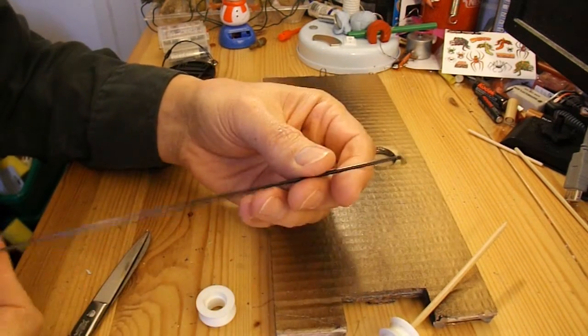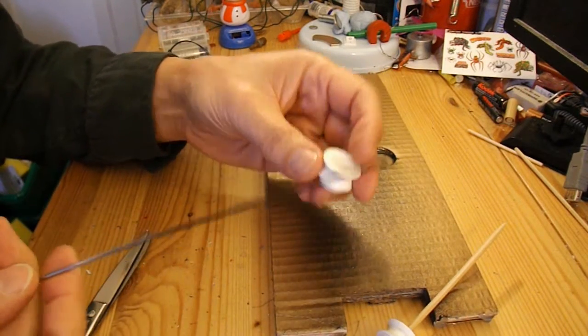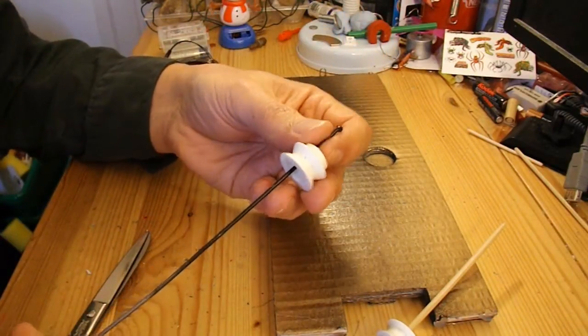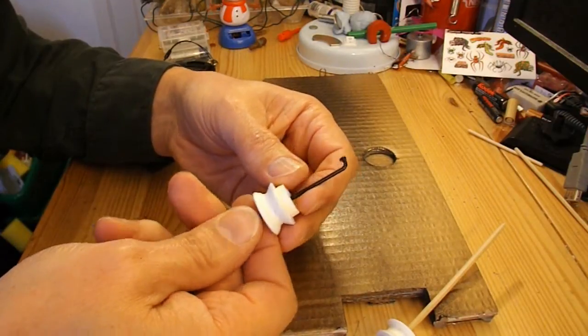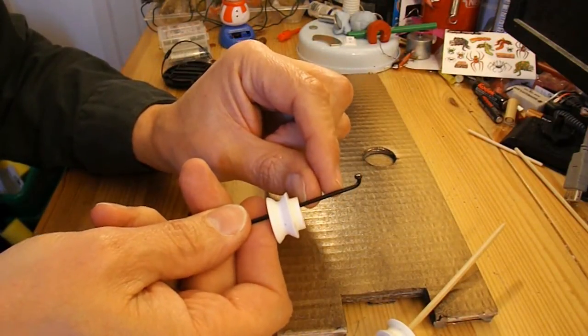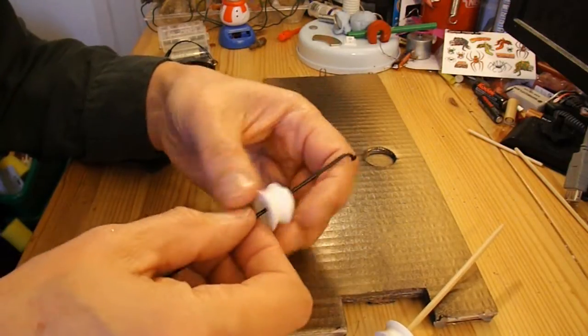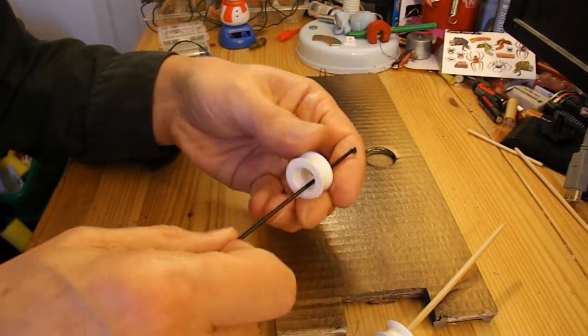I'm going to use this bicycle spoke as the shaft for this bit. So I need to bend it. I need to put the tube on it first, then put the tape on it and then bend it so we've got a crank handle so we can wind it up.